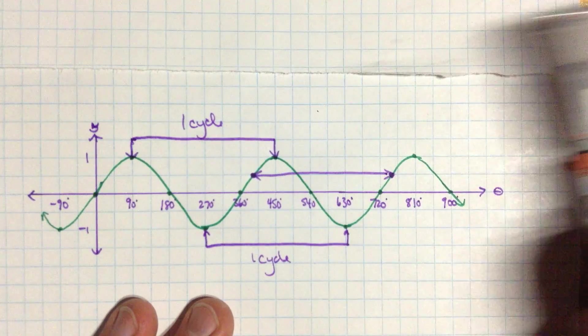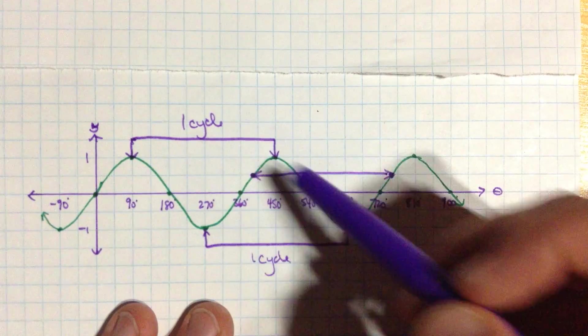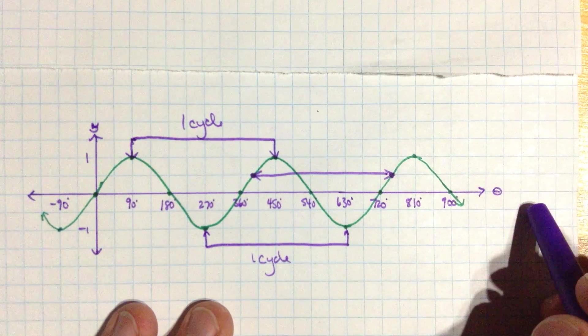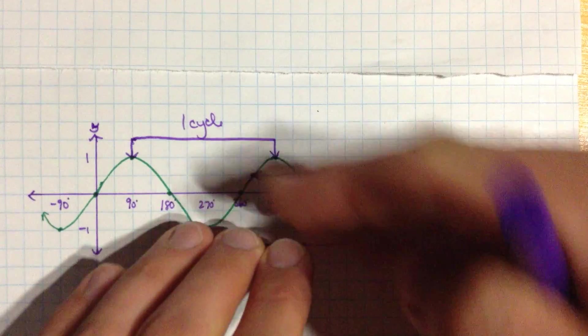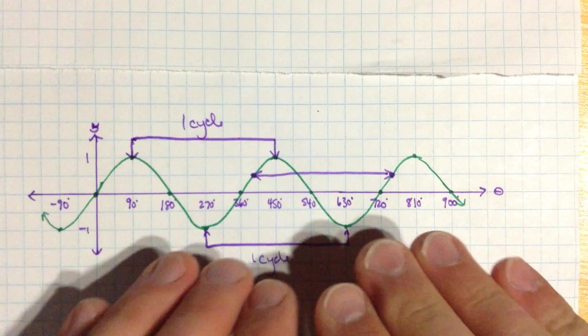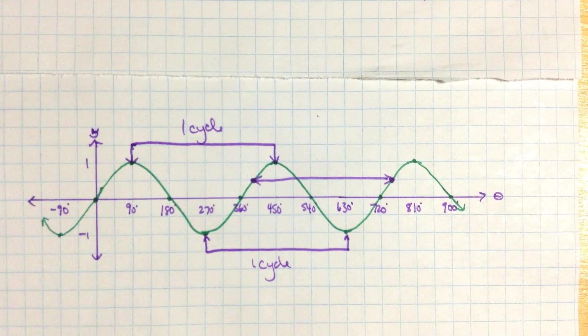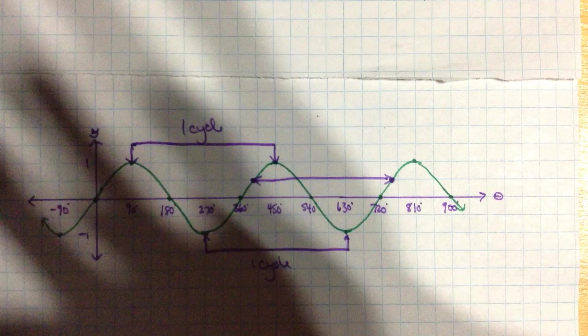So that is how we draw the sine curve. And all we've really did is that's effectively like doing a table of values. But it's going to let us see what the curve looks like and let us understand it. And next we can look at how to modify it. And the way we will modify it is by stretching it out horizontally, stretching it out vertically, shifting it up or down, or left or right. So those are the same kind of transformations we do with other functions. We'll try those with our sine function. Thanks. We'll see you next time.